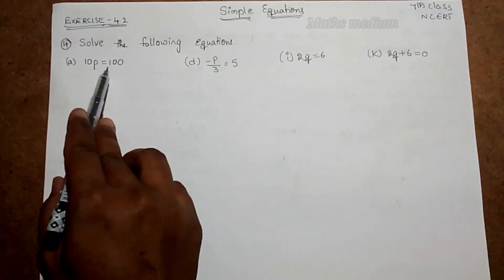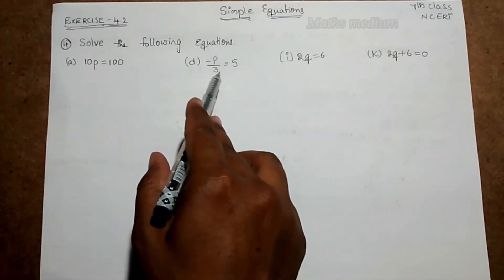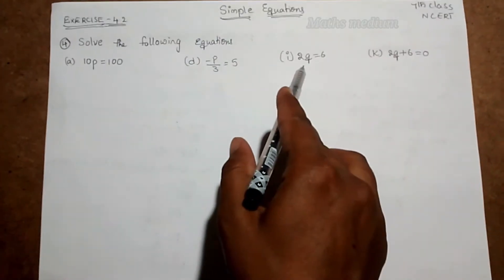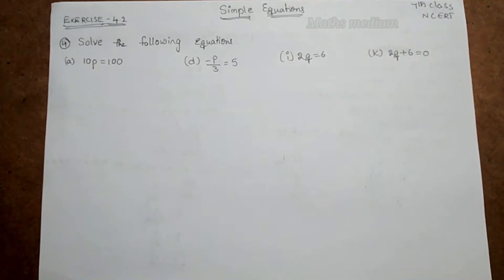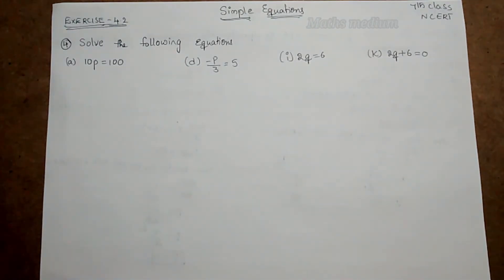Solve the following equations. Here I took randomly some equations: 10p is equal to 100, minus p by 3 is equal to 5, 2q is equal to 6, and 2q plus 6 equal to 0. So now we have to solve the equations with simple steps.